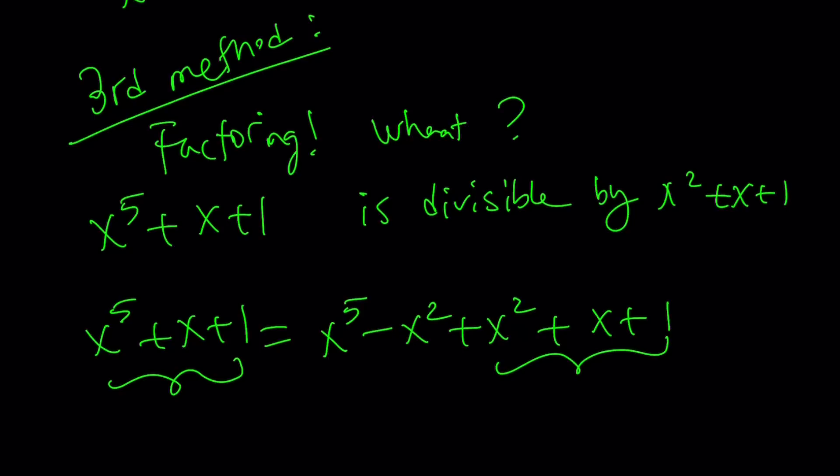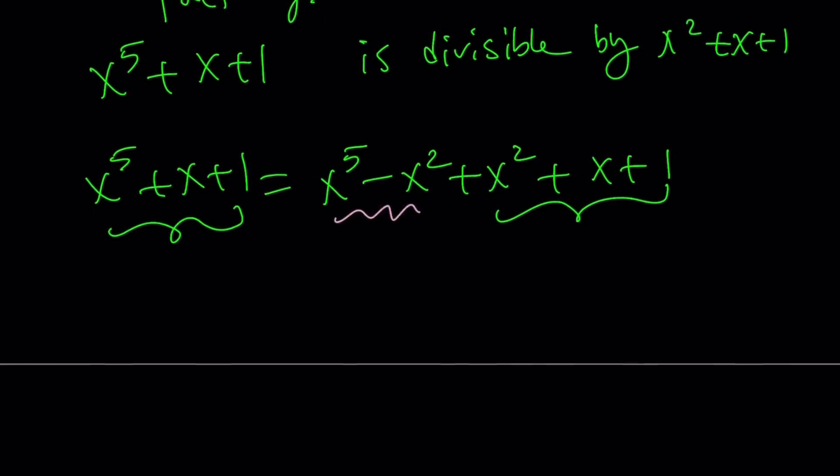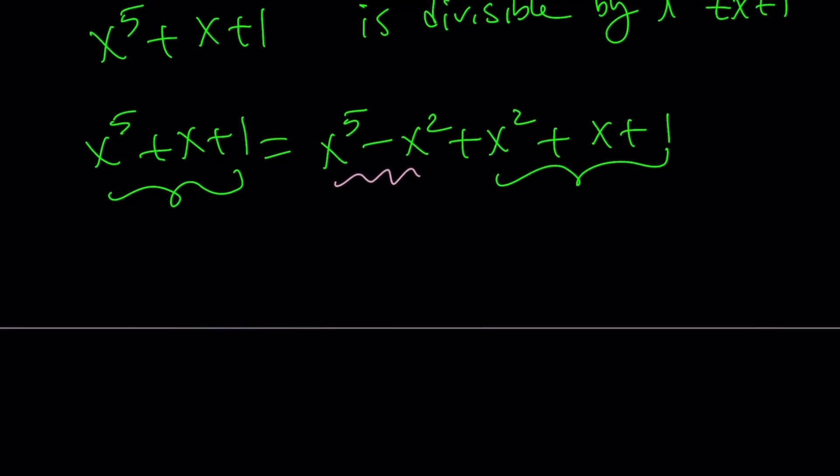So, I'm going to use an old trick, but notice that this is divisible by x squared plus x plus one, and this is divisible by x squared plus x plus one because it is x squared plus x plus one. Therefore, by the, whatever the theorem is, I don't know, this is supposed to be divisible by that as well. But it doesn't matter. You can just factor it. Let's go ahead and factor this. You take out x squared, you get x cubed minus one, and then you can put a one outside just to make it kind of complete.